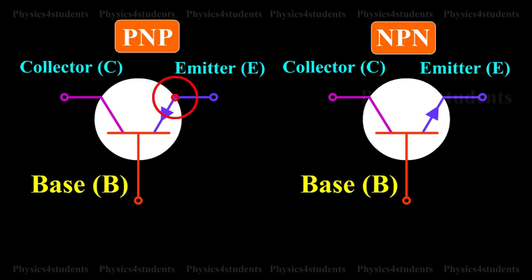The arrow on the emitter lead pointing towards the base represents a PNP transistor.